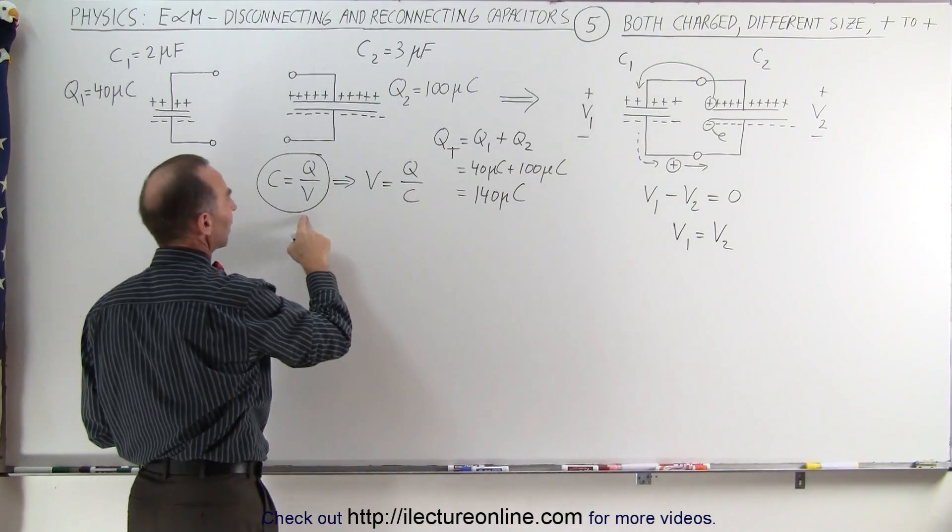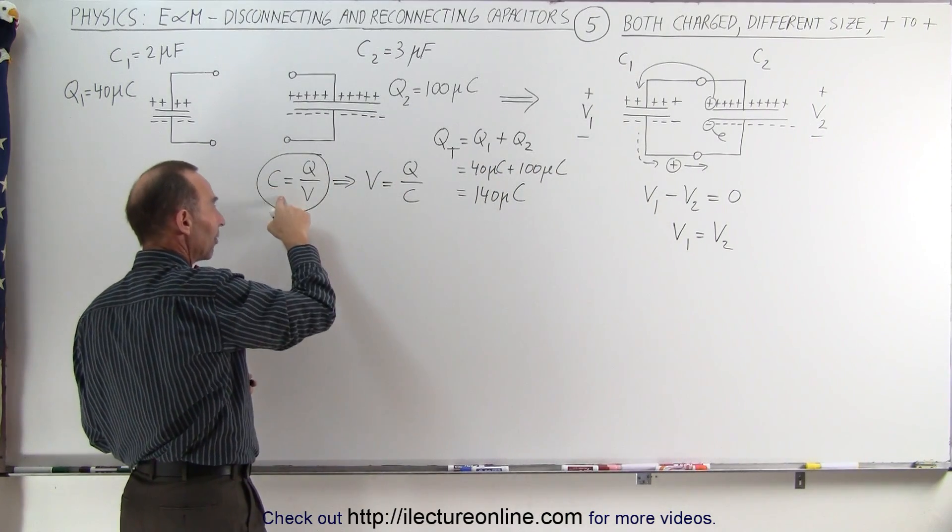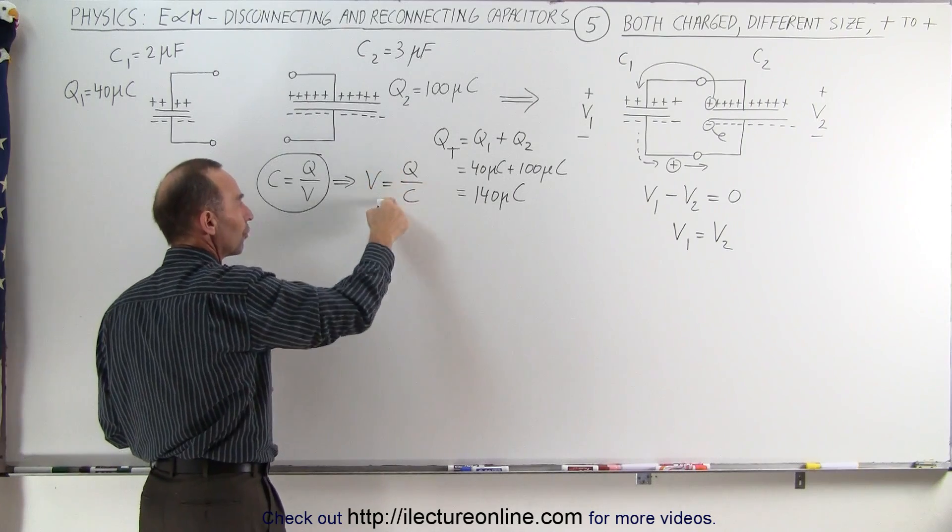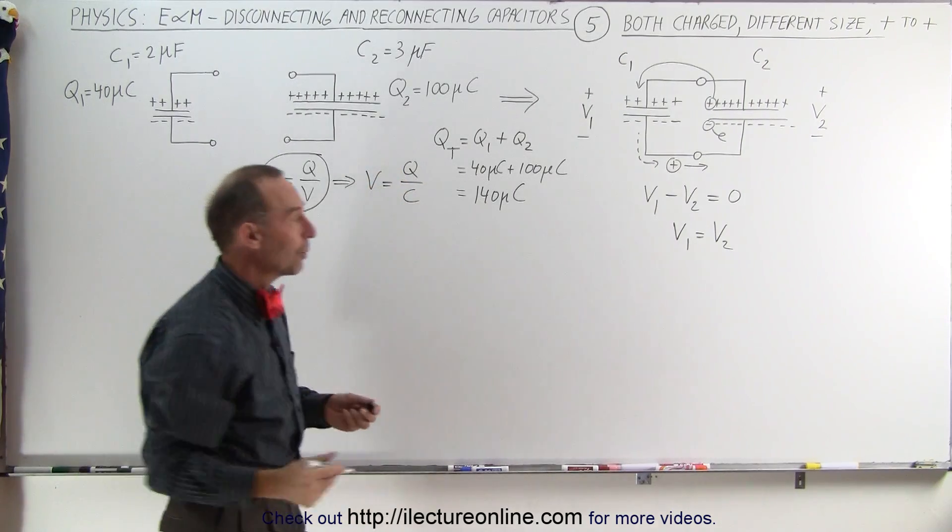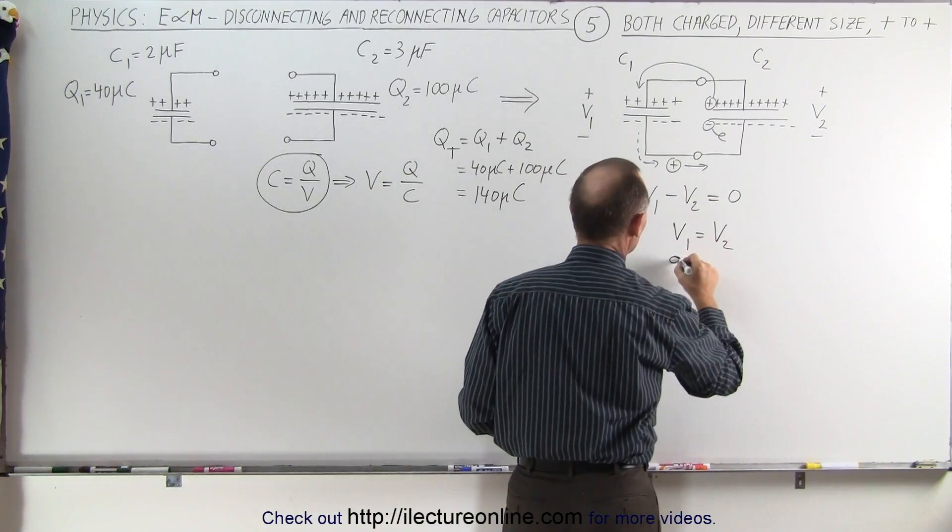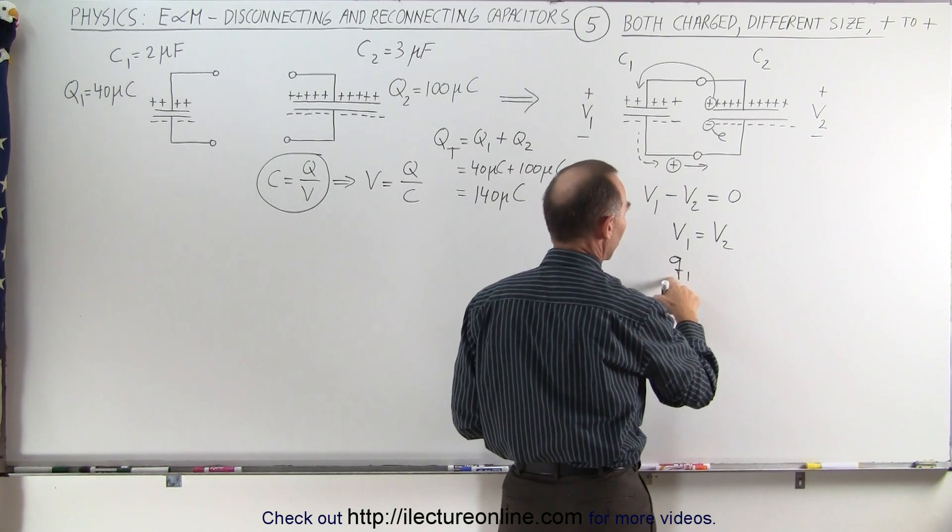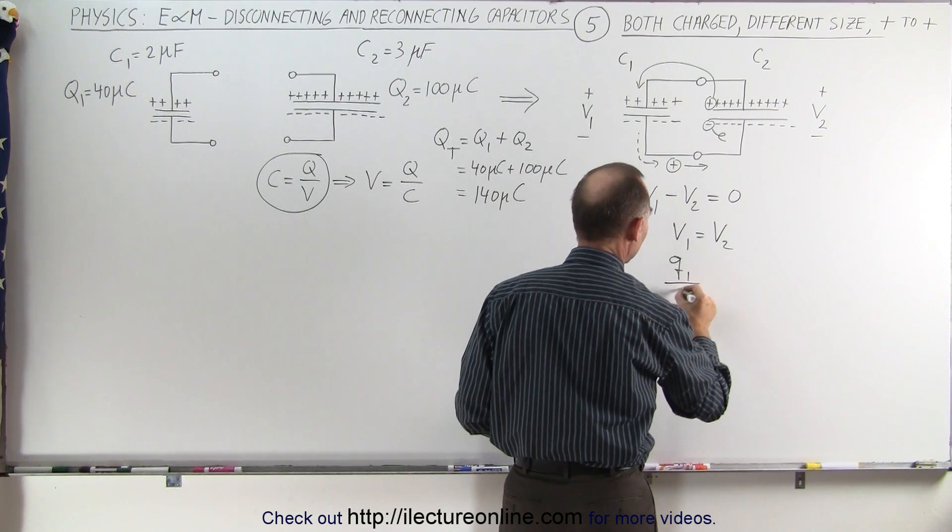And then if we go over here, we realize, using the definition of capacitance, that V is the charge over the capacitance. So here, what we can say is that the final charge on capacitor one, let's call it small q1, divided by C1.